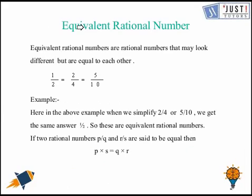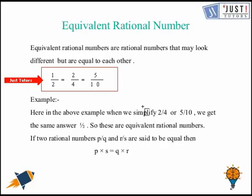Now let's see what do we mean by equivalent rational numbers. So equivalent rational numbers are rational numbers that look different, but have same values. For example, let's have a look here. It's written 1/2 is equal to 2/4 is equal to 5/10. These all are rational numbers, and they all look different. But the thing is that they all have same value, that is of 1/2.